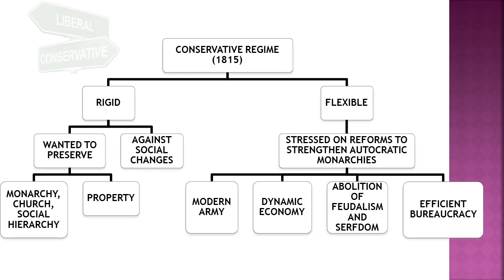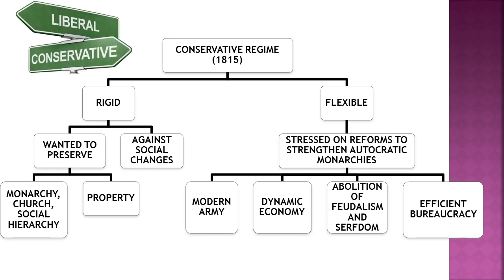They wanted to preserve the property of the rich. But after 1815, most monarchies of Europe began to realize that it is good to be flexible, because the changes introduced by Napoleon were very powerful for the economy and administrative system. So most monarchies decided to become a little flexible and stressed on reforms. They wanted a modern army, a dynamic economy allowing free flow of goods and easy trade, abolition of feudalism and serfdom — meaning taxes would go directly to the state — and an efficient bureaucracy for easy administration.